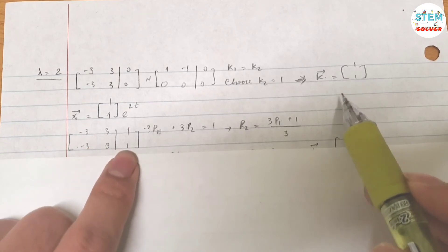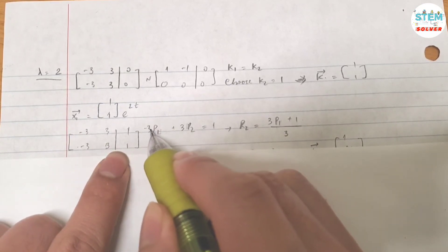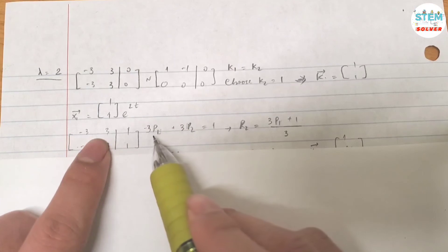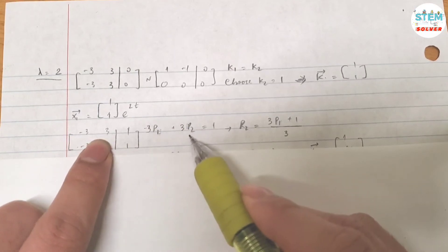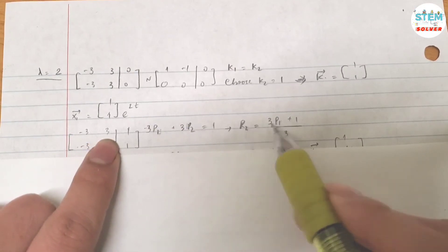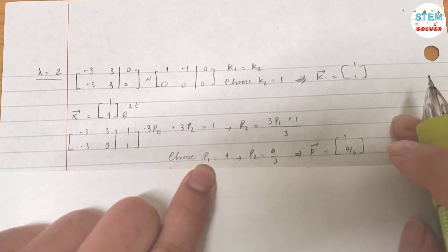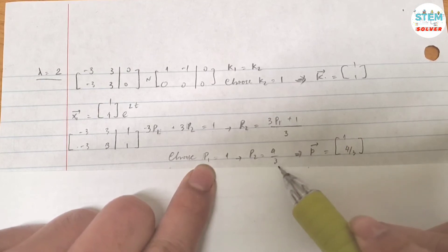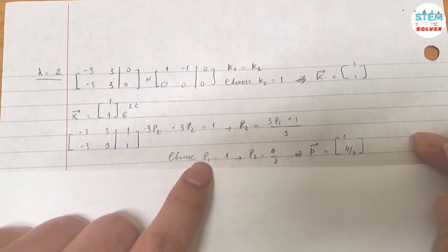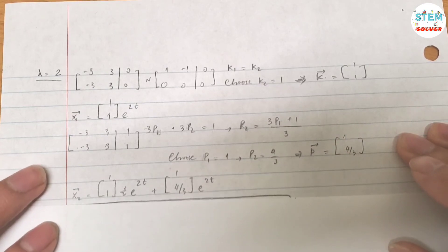From here, I have -3p1 + 3p2 = 1. Solve for p2: I got (3p1 + 1) / 3. If I choose p1 equals 1, then my p2 is 4/3. Then my vector p is [1, 4/3]. You can choose whatever value for p and k as long as they are not zero. Now it's time to write the final answer.